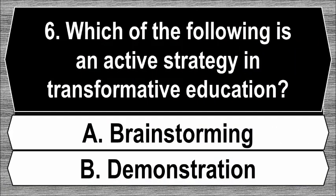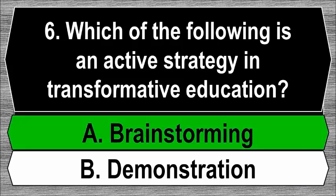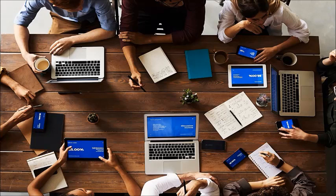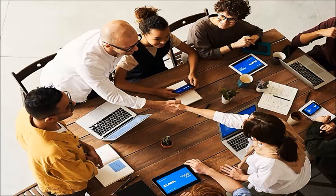Question 6. Which of the following is an active strategy in transformative education? A. Brainstorming. B. Demonstration. The best answer is A, brainstorming. Transformative learning focuses on the idea that learners can adjust their thinking based on new information. This connects to brainstorming, which refers to group discussion where the team generates ideas to solve defined problems, critically thinking and extracting certain information.